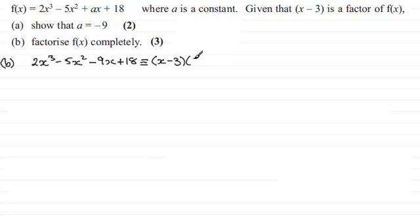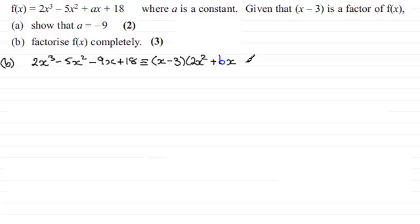There are two ways we can approach finding this quadratic factor and I'll show you both methods. I'm going to go by inspection first. I know that at the front of this quadratic factor it's got to be 2x squared, so that x multiplied by 2x squared gives me the 2x cubed. Then we'll have an unknown x term — I'll write plus Bx. It's very easy to find the constant, because minus 3 multiplied by the constant has got to give me plus 18, so it's clearly minus 6.